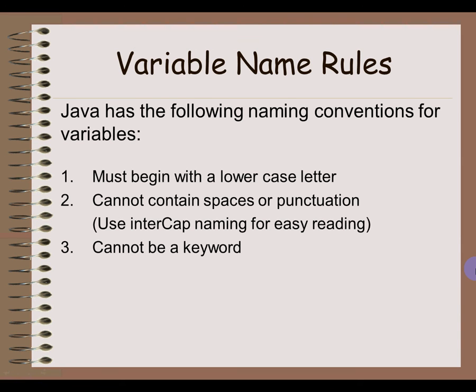Third, the names of your variables cannot be a keyword — so you can't have a variable named public, static, or main, because those are keywords used in Java. Fourth, your variable must have a unique name; you cannot have two variables both named username, because you won't know which one you're trying to use.